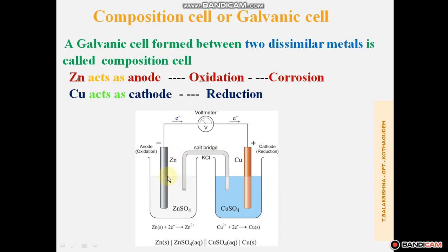Among these two compositions, whichever is highly reactive acts as the anode, and whichever is less reactive acts as the cathode. Zinc is highly reactive compared to Copper. Zinc is higher in the electrochemical series, and the metal higher in the electrochemical series is more reactive. The metal acting as the anode is ready to participate in the oxidation reaction. Oxidation is nothing but corrosion — remember this point.